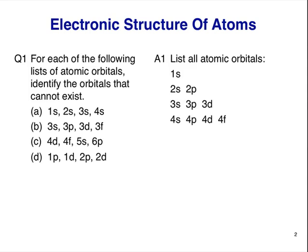The next shell has four subshells: the 4s, 4p, 4d, and 4f orbitals. In the next two shells, there are four subshells each. These are the 5s, 5p, 5d, and 5f orbitals, and the 6s, 6p, 6d, and 6f orbitals.